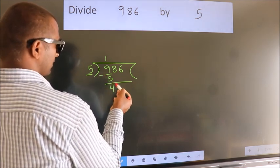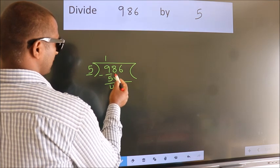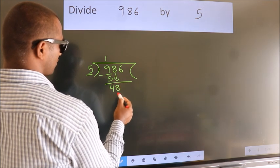After this, bring down the beside number. So, 8 down, making 48.